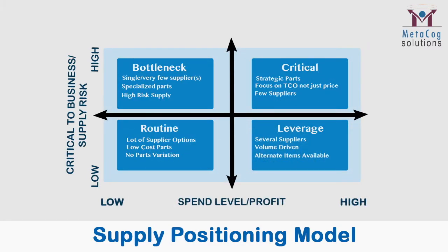Any product, goods, or service we buy or procure has certain characteristics. It is based on certain parameters, but there are two important parameters which have been decided. One is the amount of expenditure an organization makes for that particular product, and on the Y axis is the impact of that particular product on the business organization.